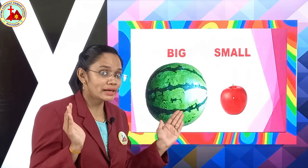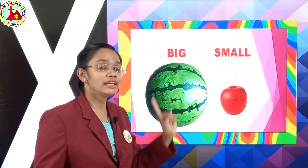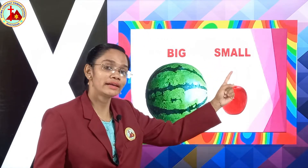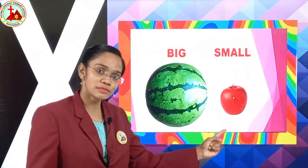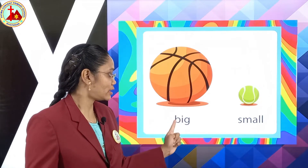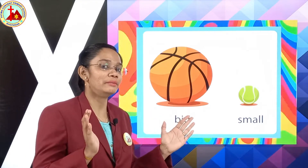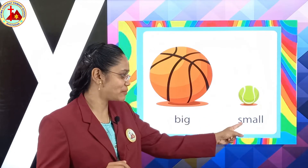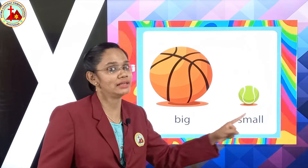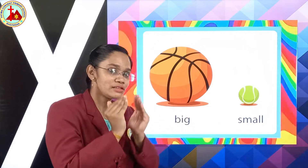Repeat after me: big, small. Again, the ball. Ball is big — B-I-G. Big. Opposite of big is small. This is a small ball — S-M-A-double-L. Small. Big, small.